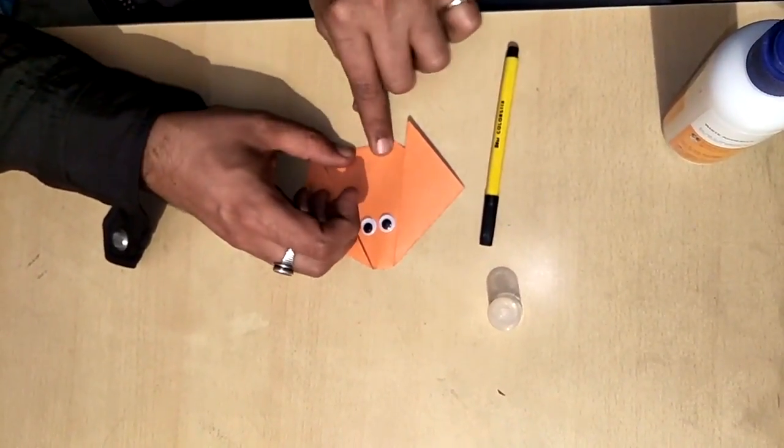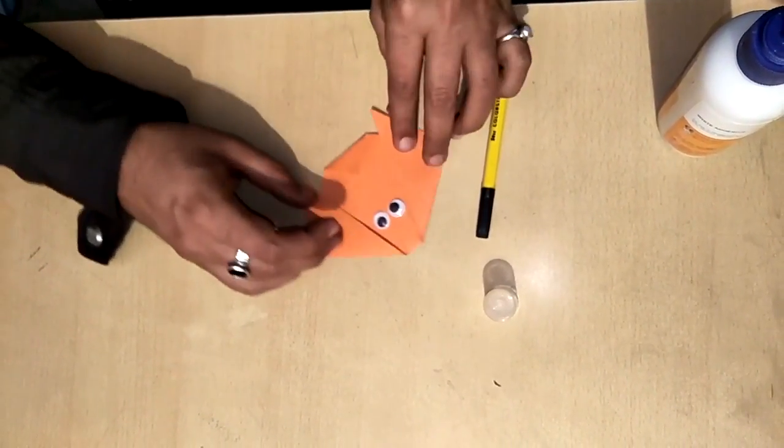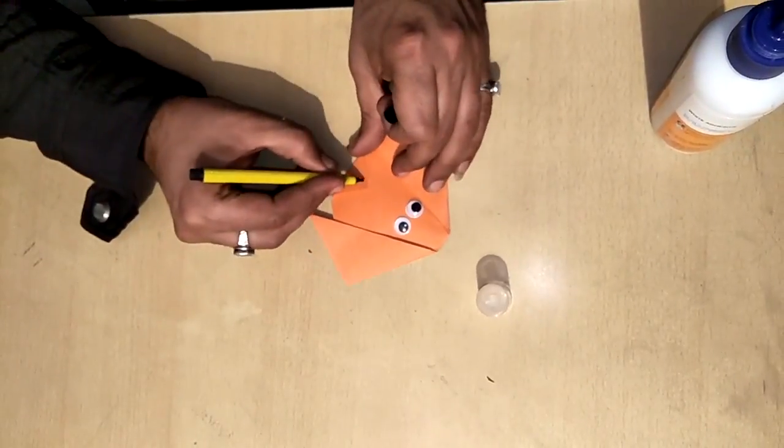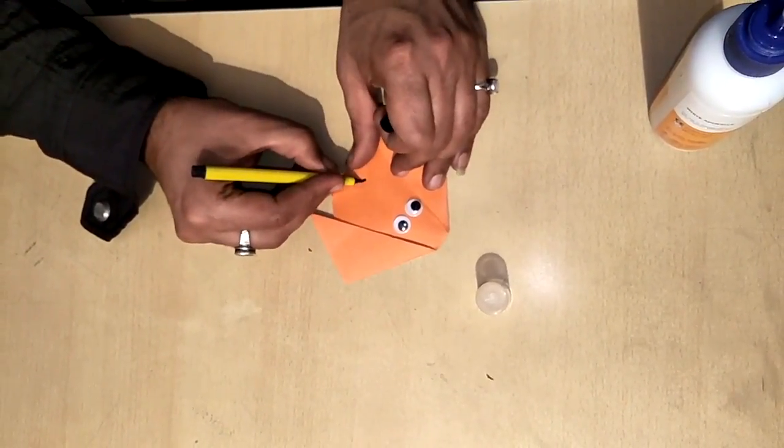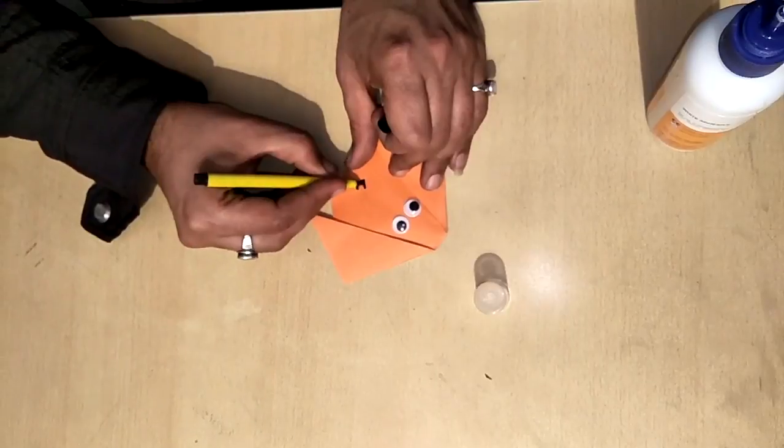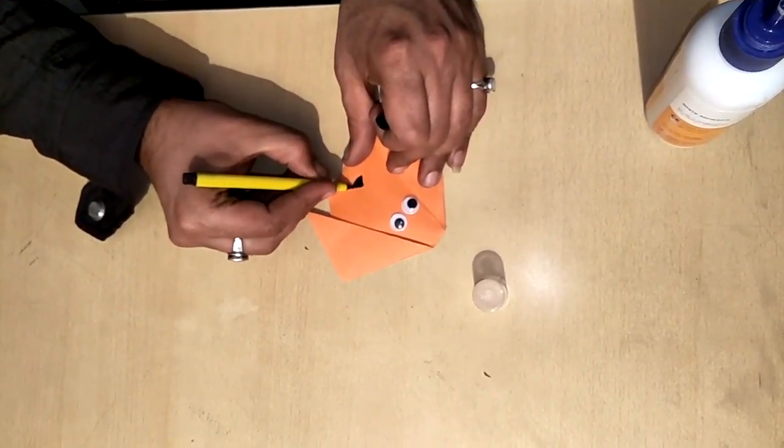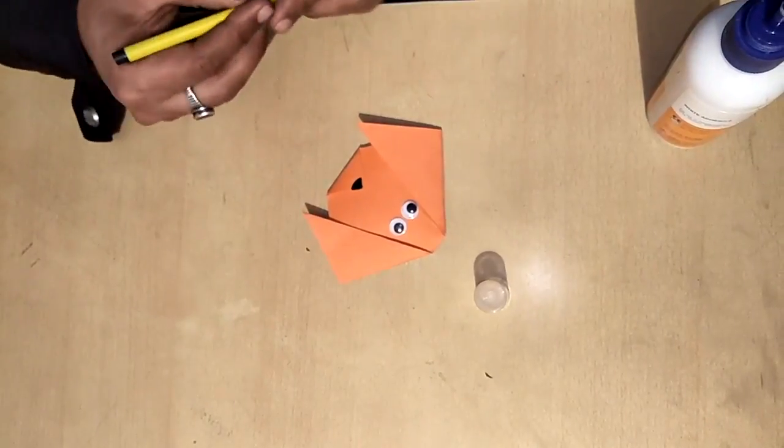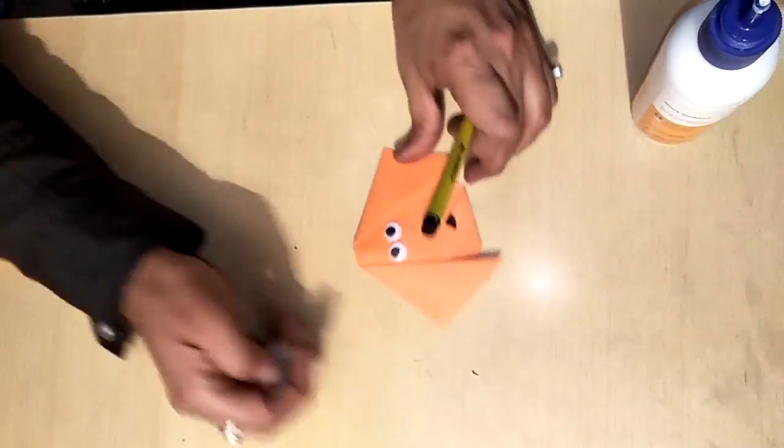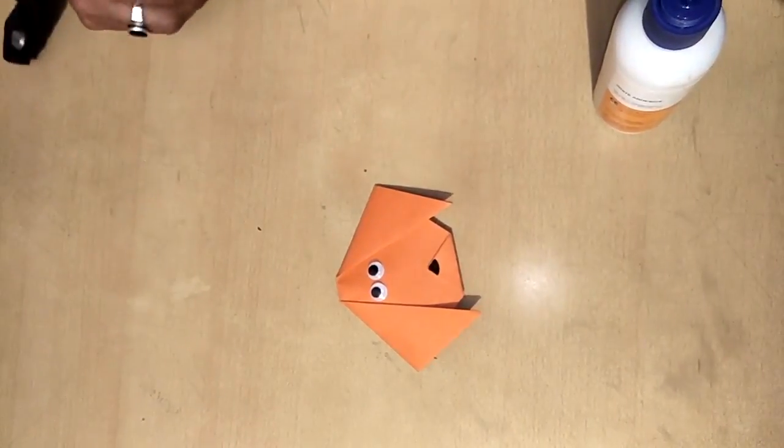Now we can paste the face and the nose of the dog we can add with the sketch pen. And this one is an origami dog. Thank you.